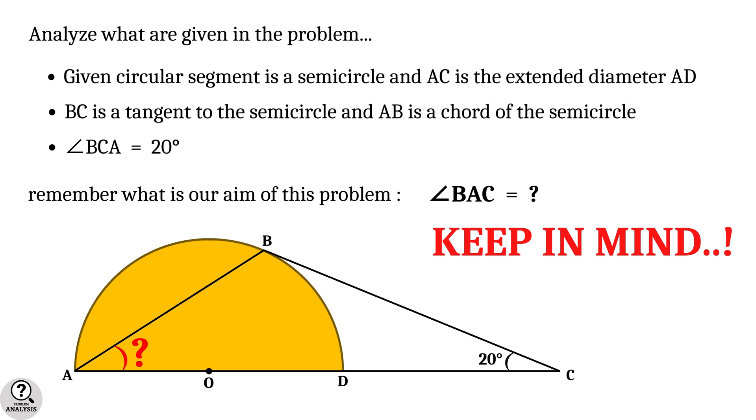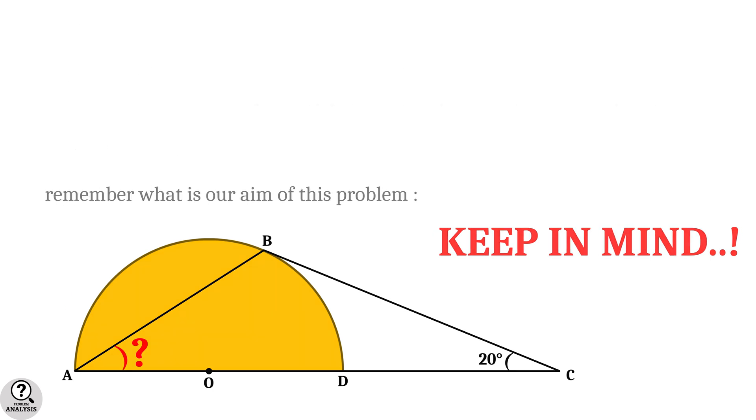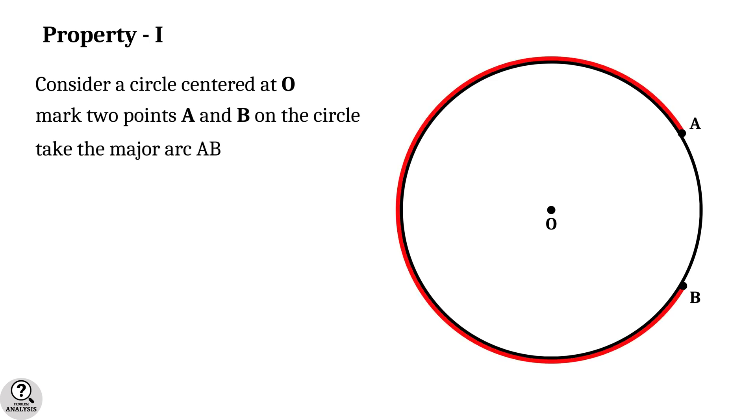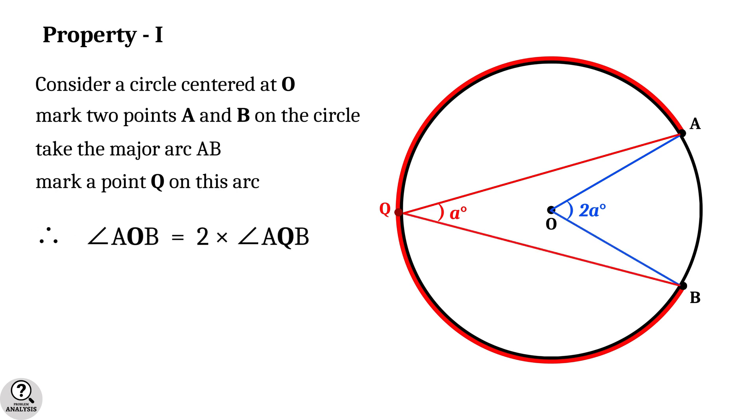Before going to the further explanations, we need to note two important properties of angles inside a circle and tangents to a circle. Property 1: Consider a circle centered at O. Mark two points A and B on the circle. Now take the major arc AB and mark an arbitrary point Q on this arc. Then the fact is, the angle AOB is equal to 2 times the angle AQB. That is, the angle on a major arc is half of the angle with the center.